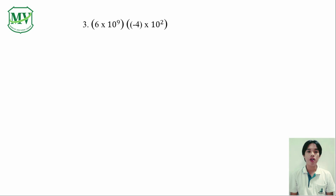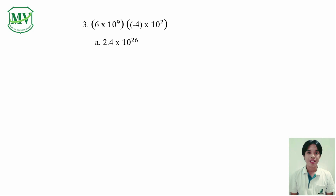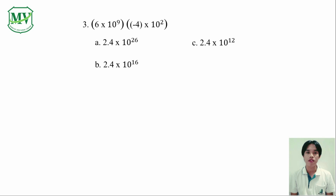Number 3: 6 times 10 to the power of 9 multiplied by negative 4 times 10 to the power of 2. A: 2.4 times 10 raised to the power of 26. B: 2.4 times 10 raised to the power of 16. C: 2.4 times 10 raised to the power of 12.